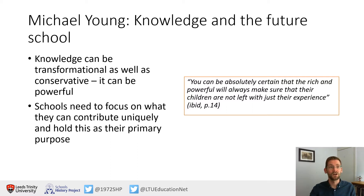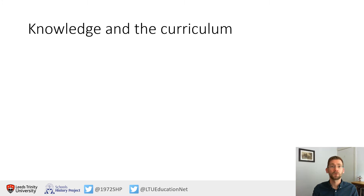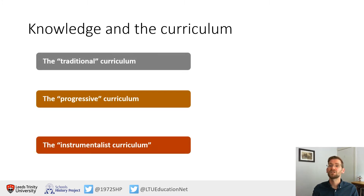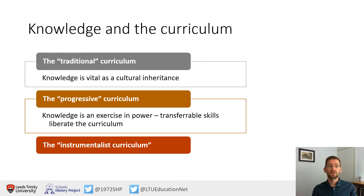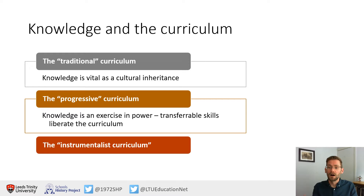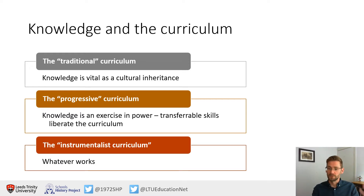So let's think about what reframing is required. Looking at our three models: the traditional curriculum sees knowledge as vital — a cultural inheritance that gives people power in a system that values it, inherently conservative, preserving power for the few who can use it. The progressive curriculum argues all knowledge is an exercise in power and therefore we should replace it with transferable skills, liberating the curriculum from oppression. And the instrumentalists simply said whatever works — they didn't particularly care about the philosophical underpinning.